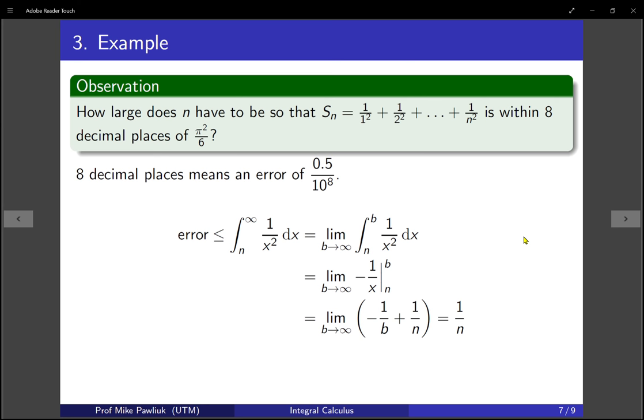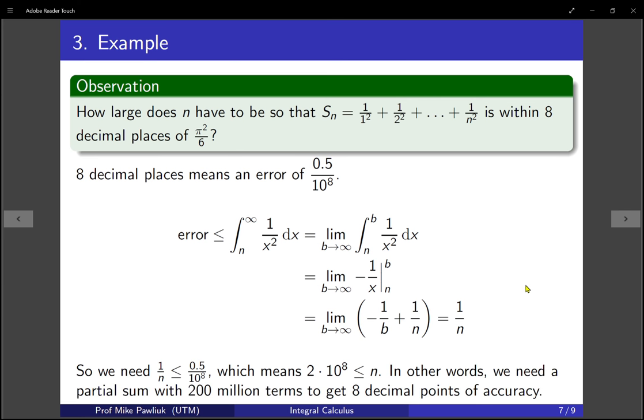Now, how many terms do we have to take to get within 8 decimal places? Well, in this case, you need 1 over n to be less than this number right here. And if you solve for n, it means as long as n is bigger than 2 times 10 to the 8. And how big is that? It's about 200 million. So in other words, if you want to get a partial sum that's within 8 decimal points of accuracy, you need to take 200 million terms, which seems like quite a bit.